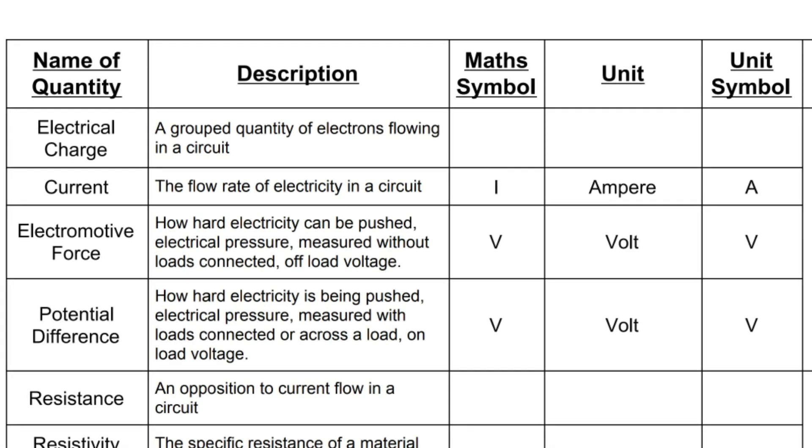What do we mean by opposition to current flow? It's the nature of the material that tries to hold electricity back — it tries to stop the electricity from flowing. Filling in the worksheet: the mathematical symbol for resistance is a capital R. The unit — we measure it in ohms, that's O-H-M-S. The unit symbol that we put after the number is the Greek letter capital omega. Often when I ask this of learners I get 'is it that horseshoe thing or that squiggly thing?' — technically it is the Greek letter omega, the last letter of the Greek alphabet. So we might see something written as R equals 15Ω, and we read that as resistance is equal to 15 ohms.